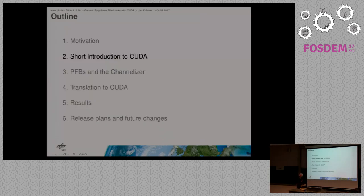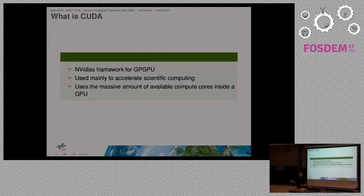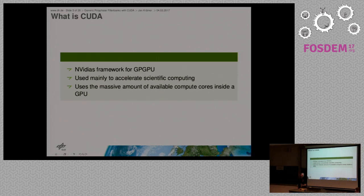So, CUDA — what is it? CUDA is NVIDIA's framework for general purpose programming on graphics processing units. It's mostly used for scientific computing where you have a huge problem that you can somehow parallelize a lot and you don't want your simulations to take years or months. It uses the massive amount of available compute cores inside the GPU — for example, the GPU we're using has about 2000 CUDA cores, which is way more than a typical x86 CPU.